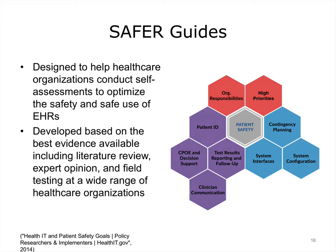The SAFER guides are designed to help healthcare organizations conduct self-assessments to optimize the safety and safe use of electronic health records. They were developed based on the best evidence available, including a literature review, expert opinion, and field testing at a wide range of healthcare organizations — from small ambulatory practices to large health systems. There are nine SAFER guides, each beginning with a checklist of recommended practices.